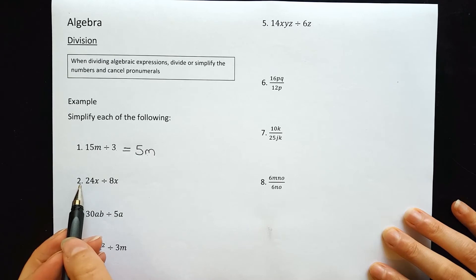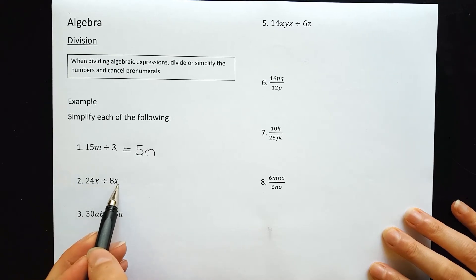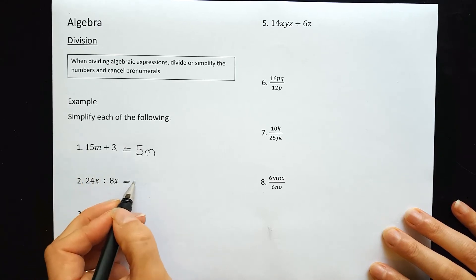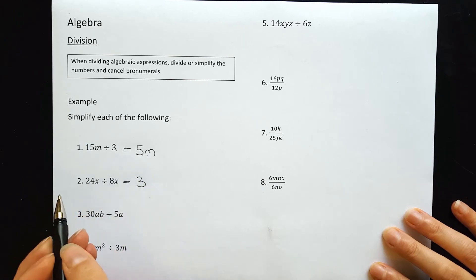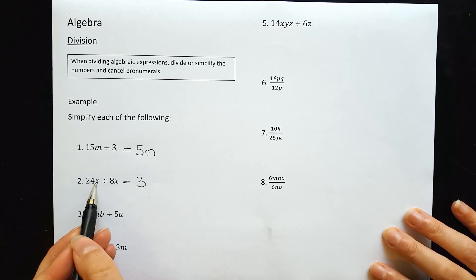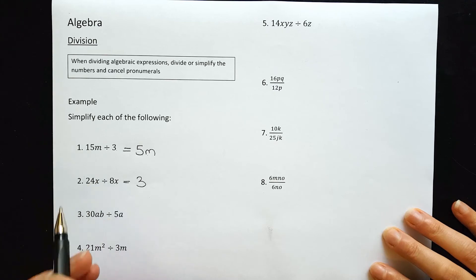For question 2, we have 24x divided by 8x. First, divide the numbers: 24 divided by 8 goes 3 times. Now, if we have an x in both terms, when you divide they cancel out. So x divided by x disappears, and the answer is just 3.